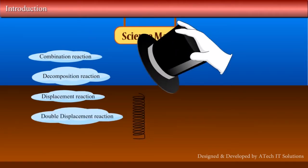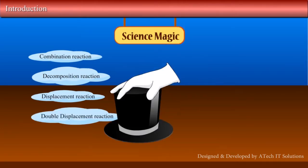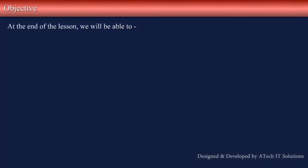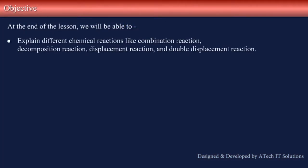Welcome to the lesson on types of chemical reactions. At the end of the lesson we will be able to explain different chemical reactions like combination reaction, decomposition reaction, displacement reaction, and double displacement reaction, and explain oxidation and reduction reactions.